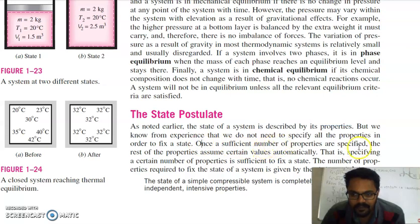Once a sufficient number of properties are specified, the rest of the properties assume certain values automatically. Like we know PV is equal to MRT. So if we know pressure and volume of the gas, temperature will be automatically fixed. That is, specifying a certain number of properties is sufficient to fix a state. The number of properties required to fix the state of a system is given by the state postulate.